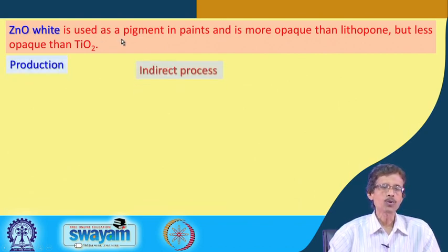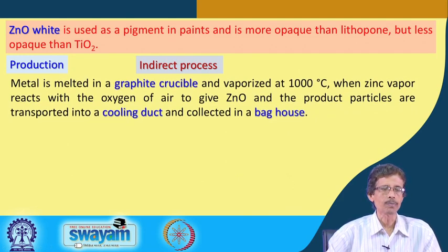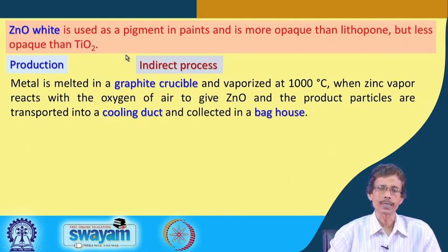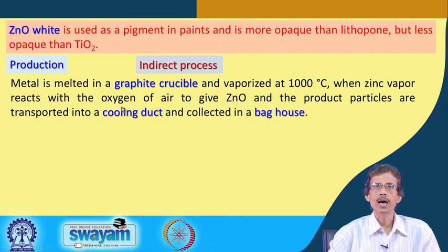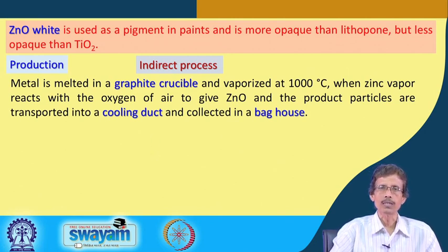One production process is the indirect process, where we take zinc in metallic form. Zinc metal is melted in a graphite crucible, which can withstand temperatures up to 1000 degrees centigrade, producing zinc vapor, which is then allowed to react with oxygen at high temperature, immediately giving zinc oxide as small particles.